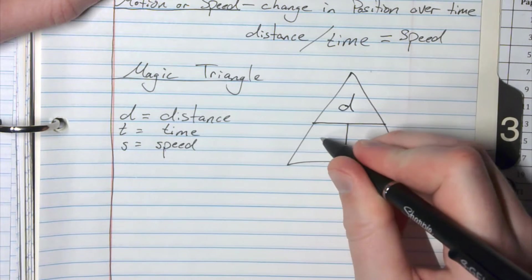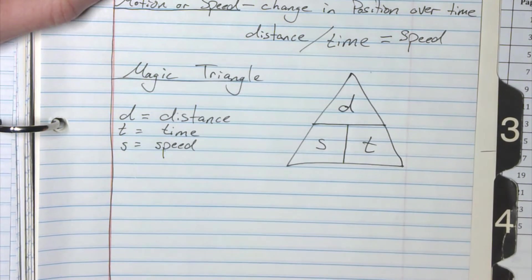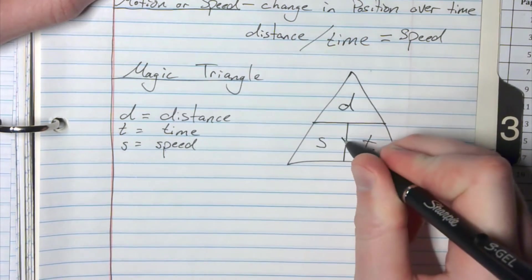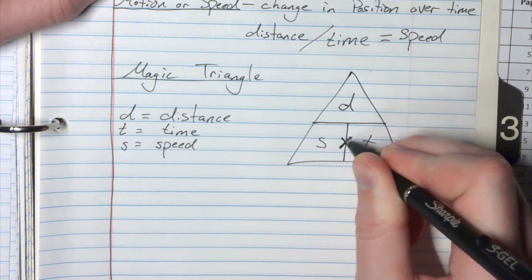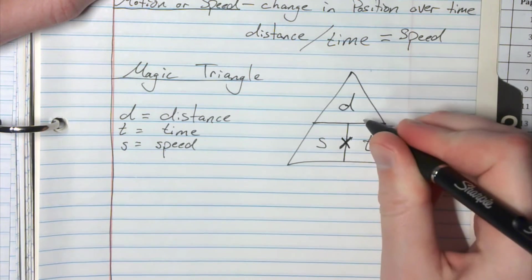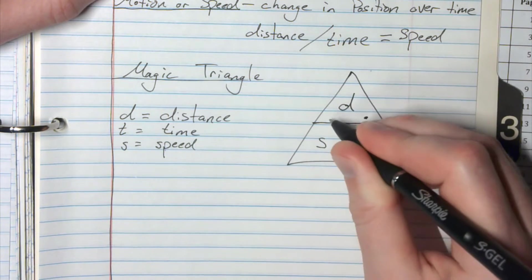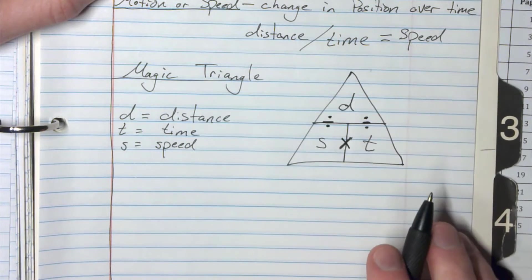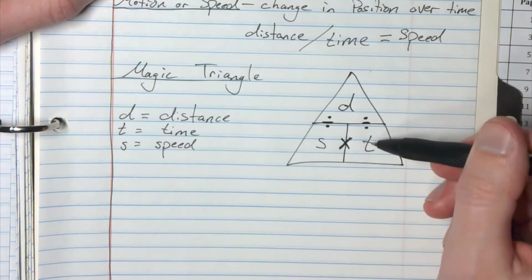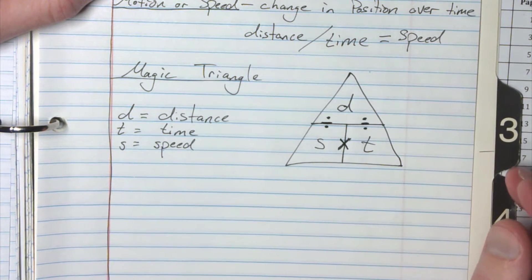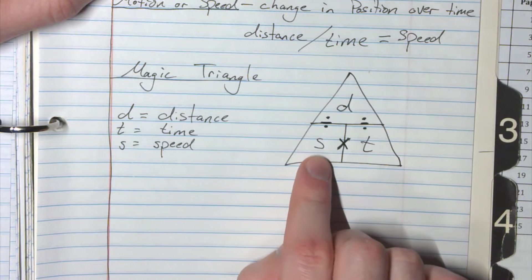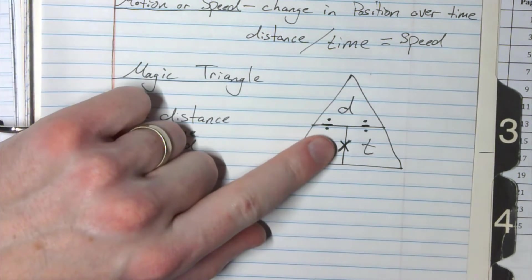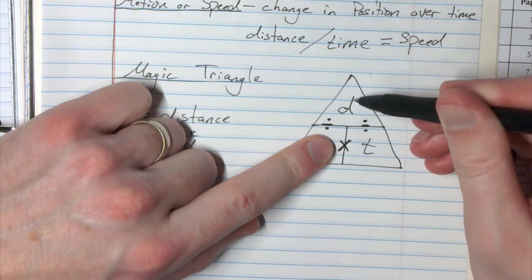Now I'm going to put in a couple symbols. So right in between the S and the T I'm going to put an X and that means multiplication. And then between the top and the bottom I'm going to put some dividing symbols, and that means that I can use this to find the distance, the time, or the speed if I'm given the other two. So let's say I'm looking for speed, which I usually am going to be. I cover up the speed and that gives me the equation. So if I cover up speed, now I'm left with the D and the T. Well, the thing between them - they're stacked - that means I divide. Distance divided by time.